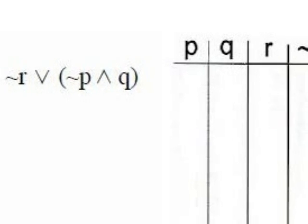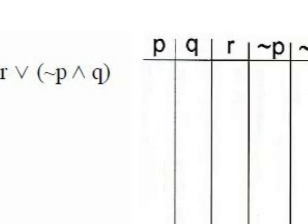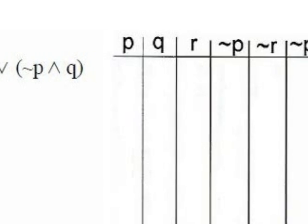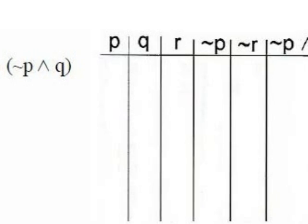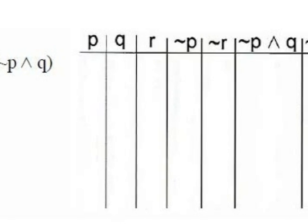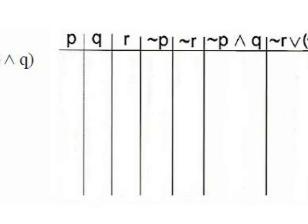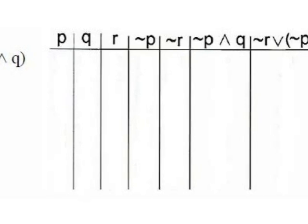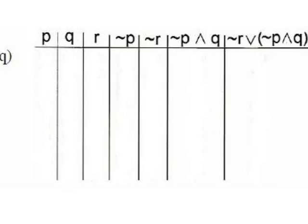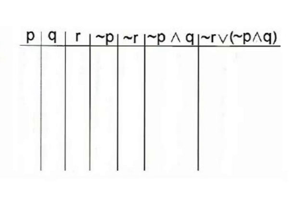Let's look at one more example. This example includes three letters, but we construct the table in the same fashion — we write down the letters, the negated letters, what's in parentheses, the negated parentheses, and the entire statement. In this example, NOT R or (NOT P and Q), the letters are P, Q, and R. The only negated letters are P and R, so we only need columns for NOT P and NOT R. What's in parentheses is NOT P and Q. This set of parentheses is not negated, so we don't need a column for the negated parentheses. And the entire statement is NOT R or (NOT P and Q).